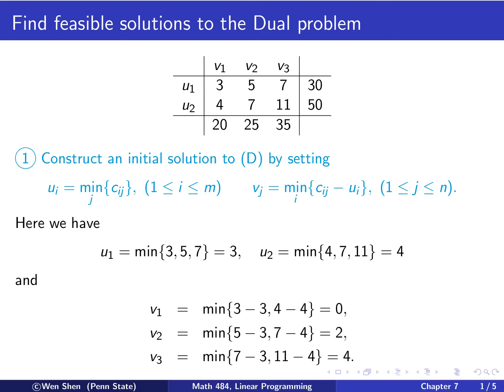Once we have set up u1, u2, now we can set the v's. For v1, by this definition, it will be the minimum of the first row subtracting the corresponding u value. So I have 3 minus 3 and 4 minus 4, which is 0. For v2, I will take 5 minus 3 and 7 minus 4, and find the minimum of them, which is 2. And v3 would be 7 minus 3 and 11 minus 4, the minimum of those two, which is 4. So we have an initial set of values for the ui's and the vj's.